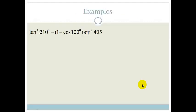It says tan squared 210 degrees, minus bracket 1 plus cos of 120 degrees, times sin squared 405 degrees. Okay, let's not panic just yet.